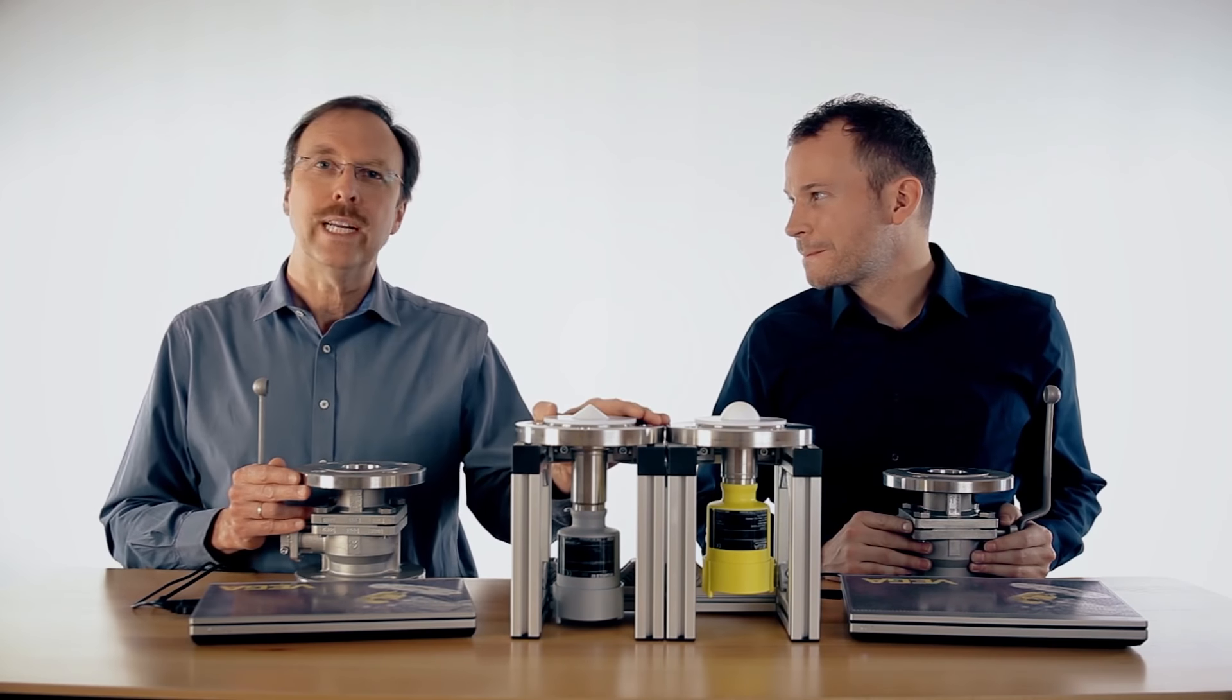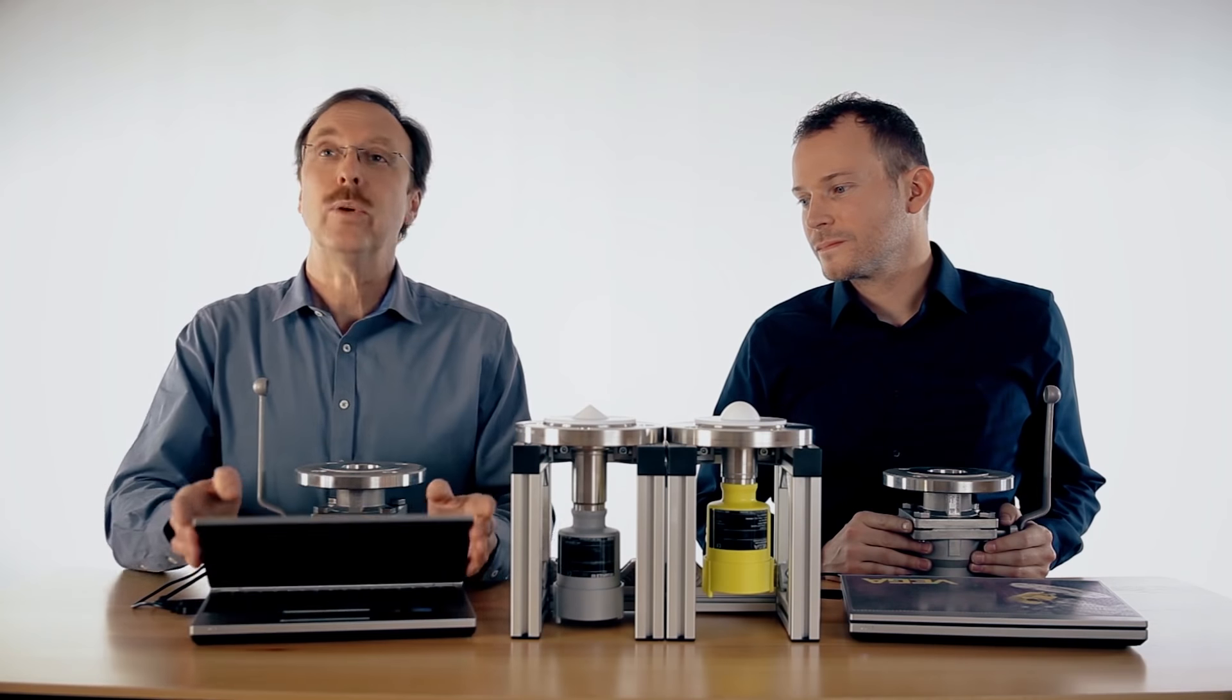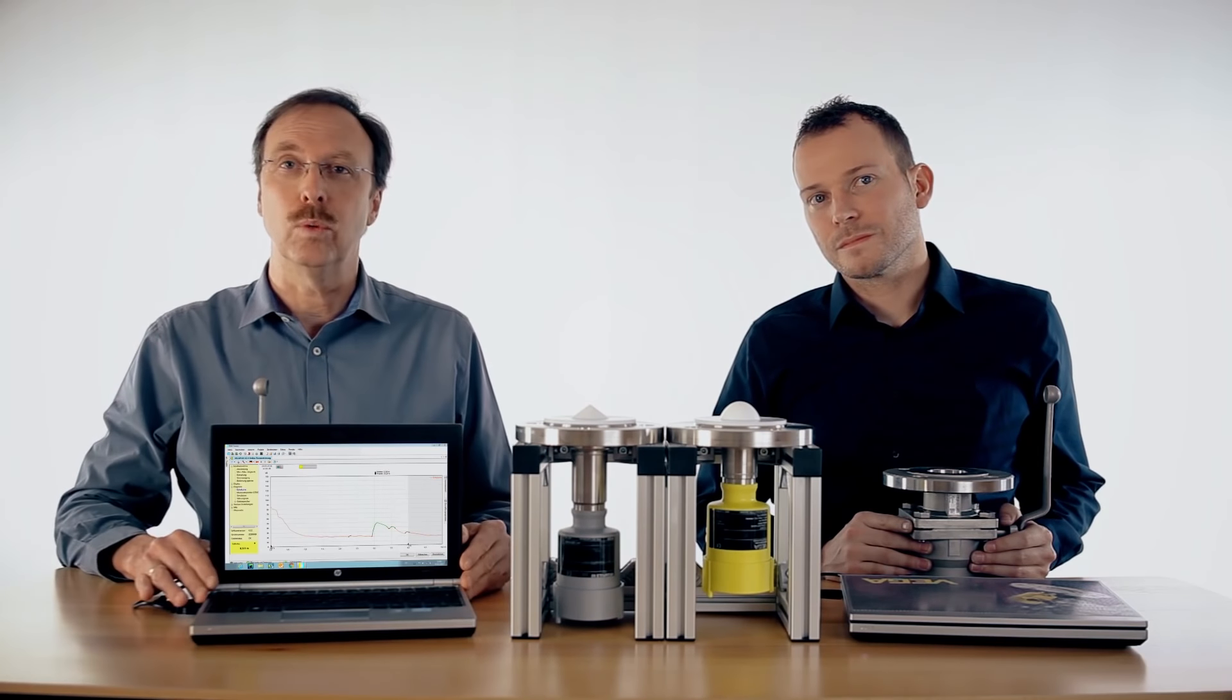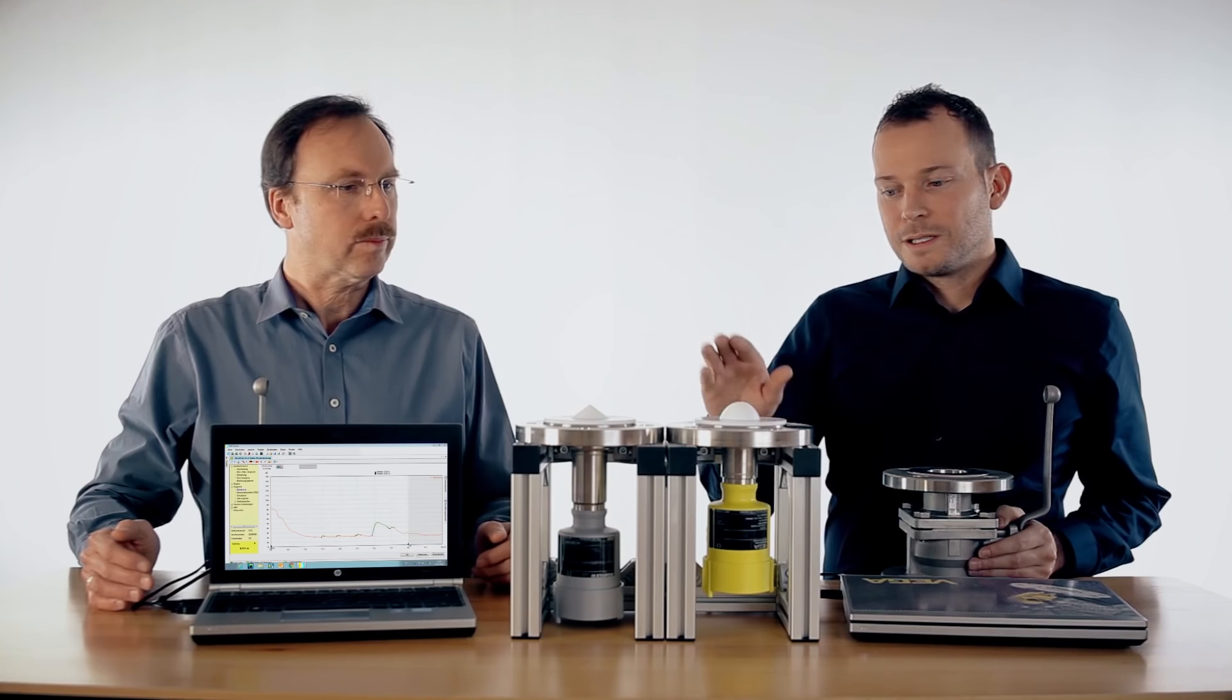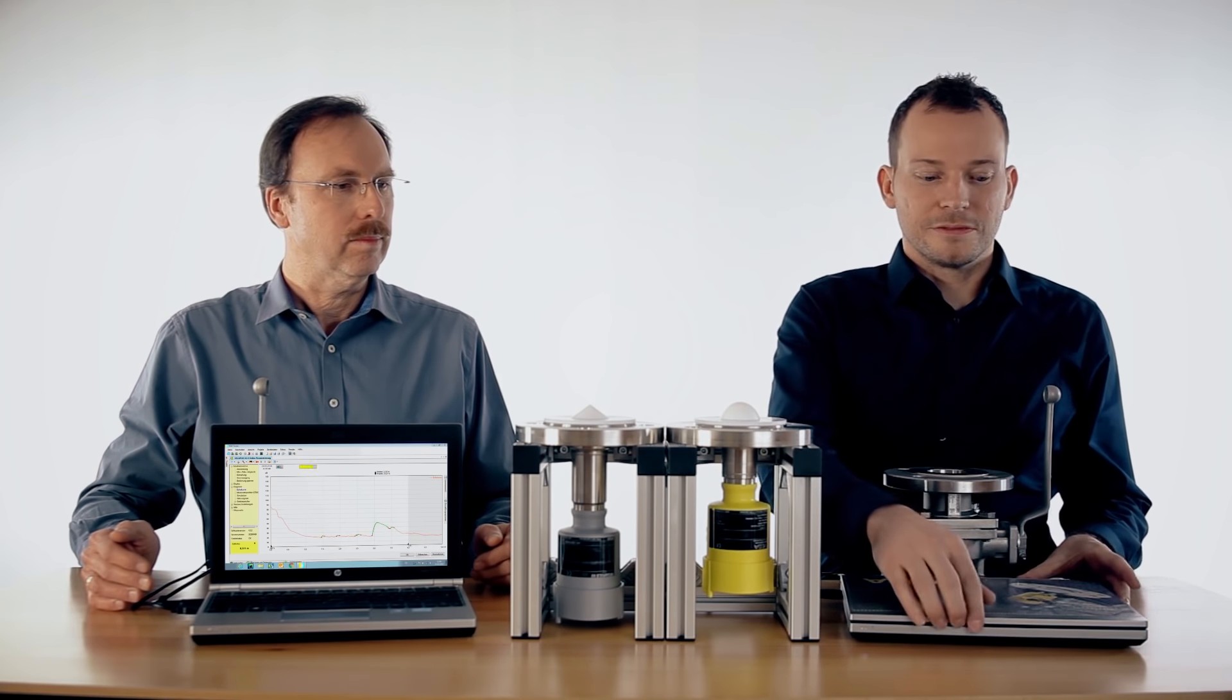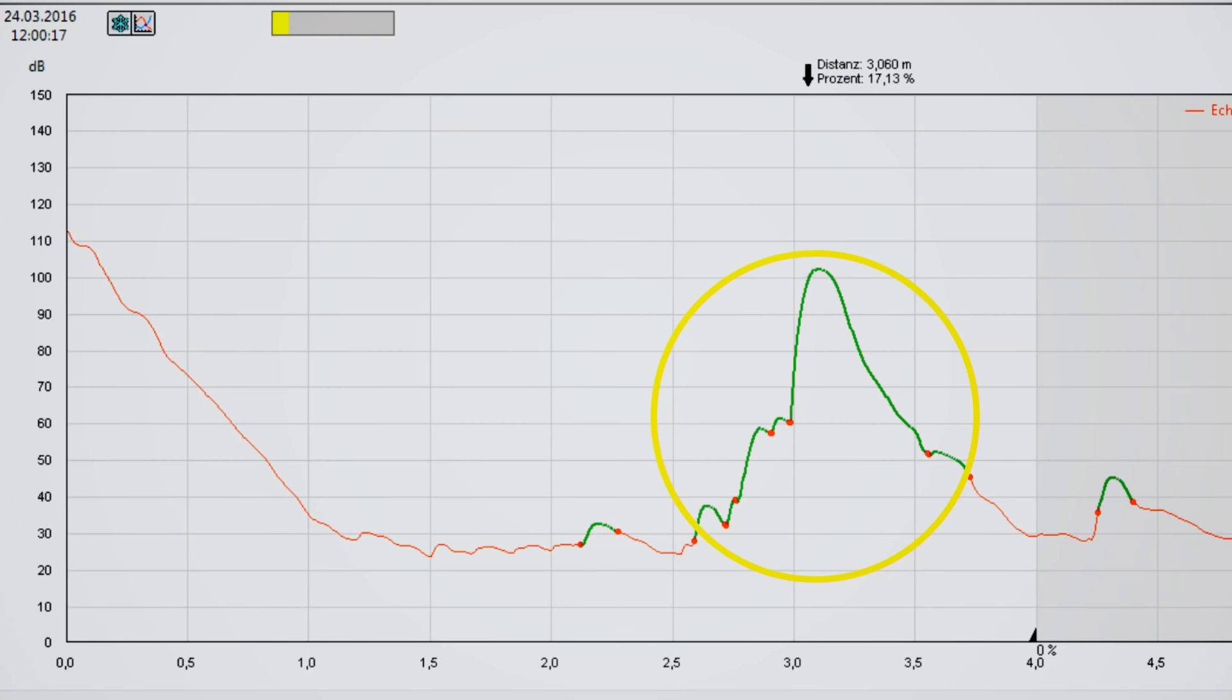We have here a radar sensor with 26 GHz technology and we are measuring at the moment at the top of the roof of this room. You can see a nice echo and there is no influence of any disturbance. The same we have here with the Vega Pulse 64. We are measuring up to the roof and also here we see the echo curve of the sensor.